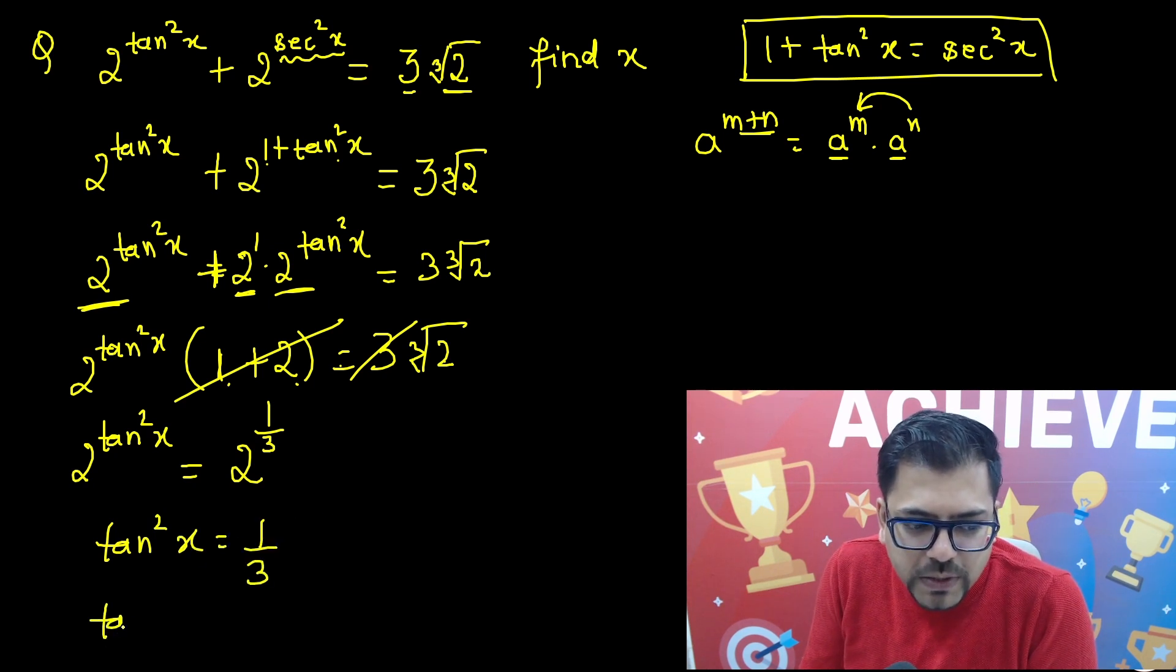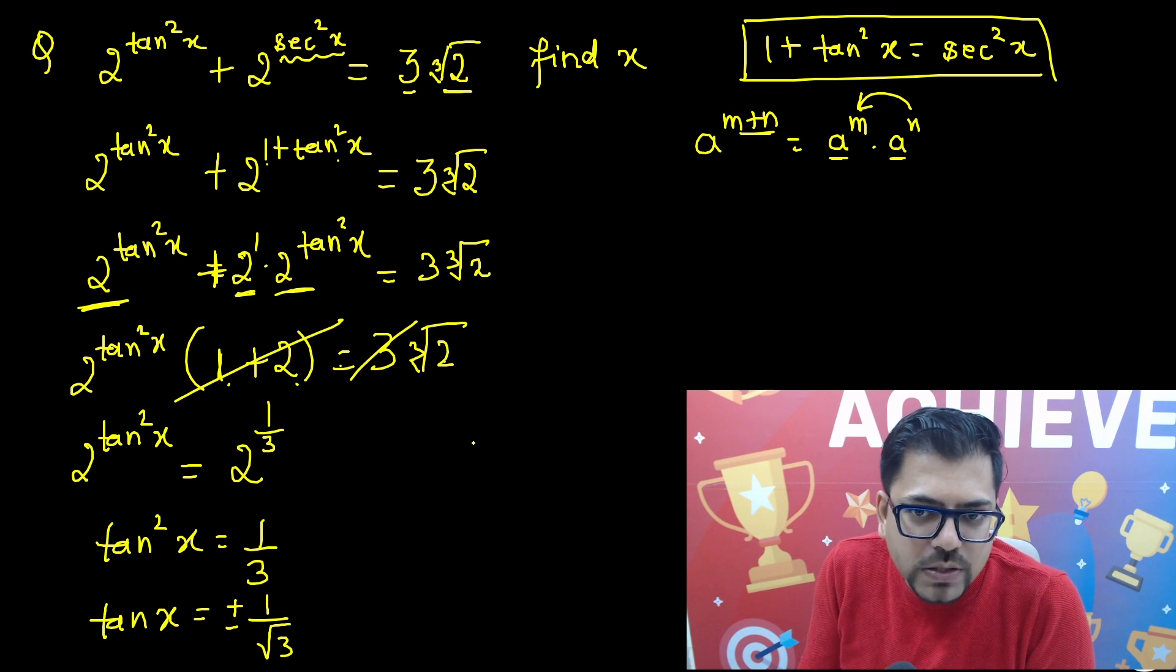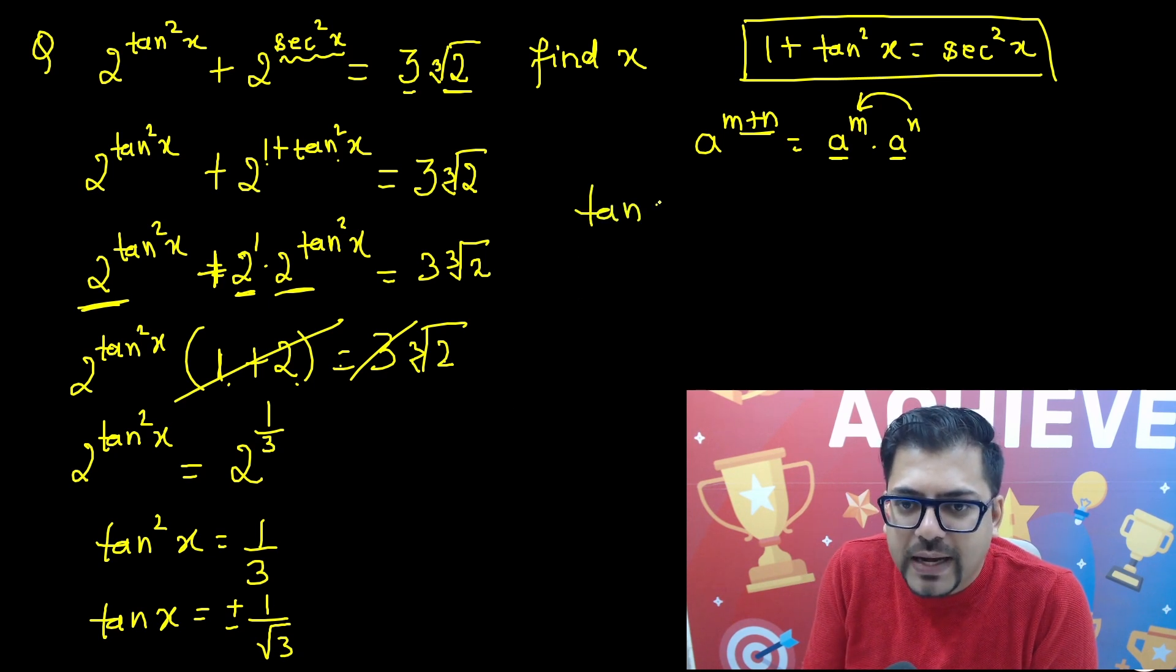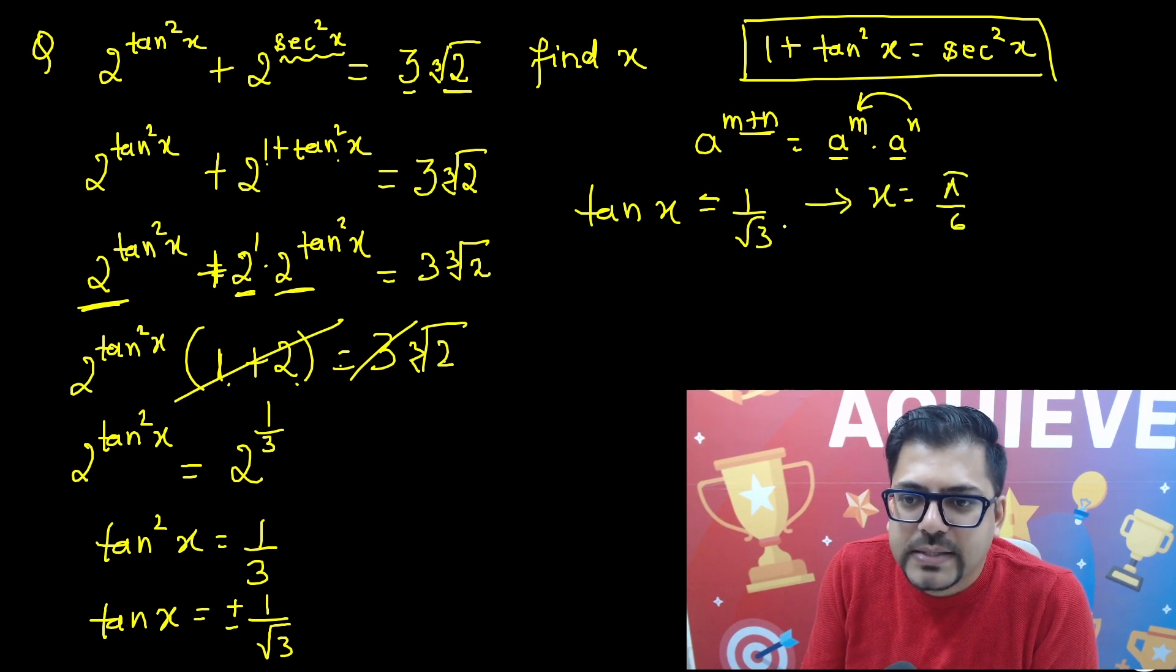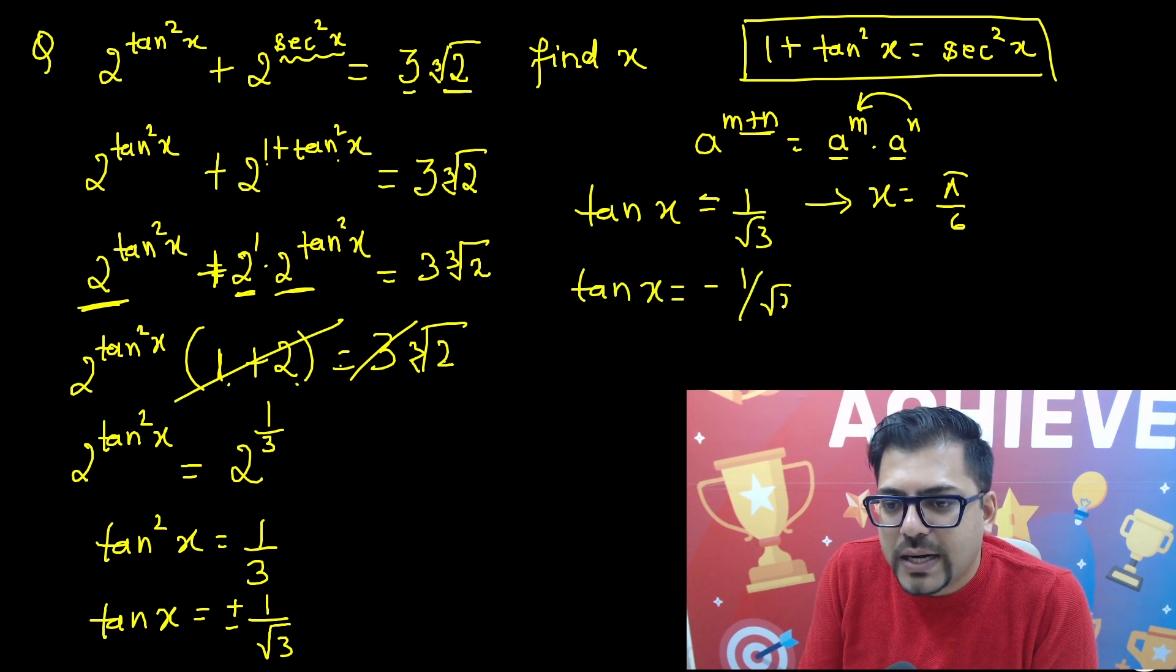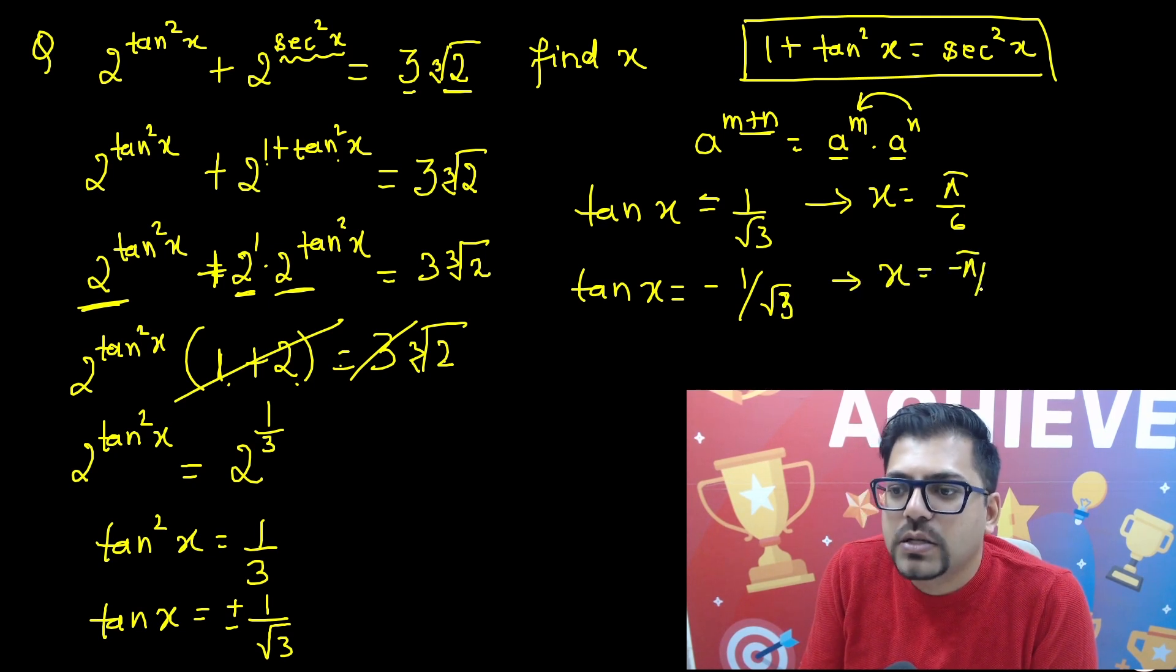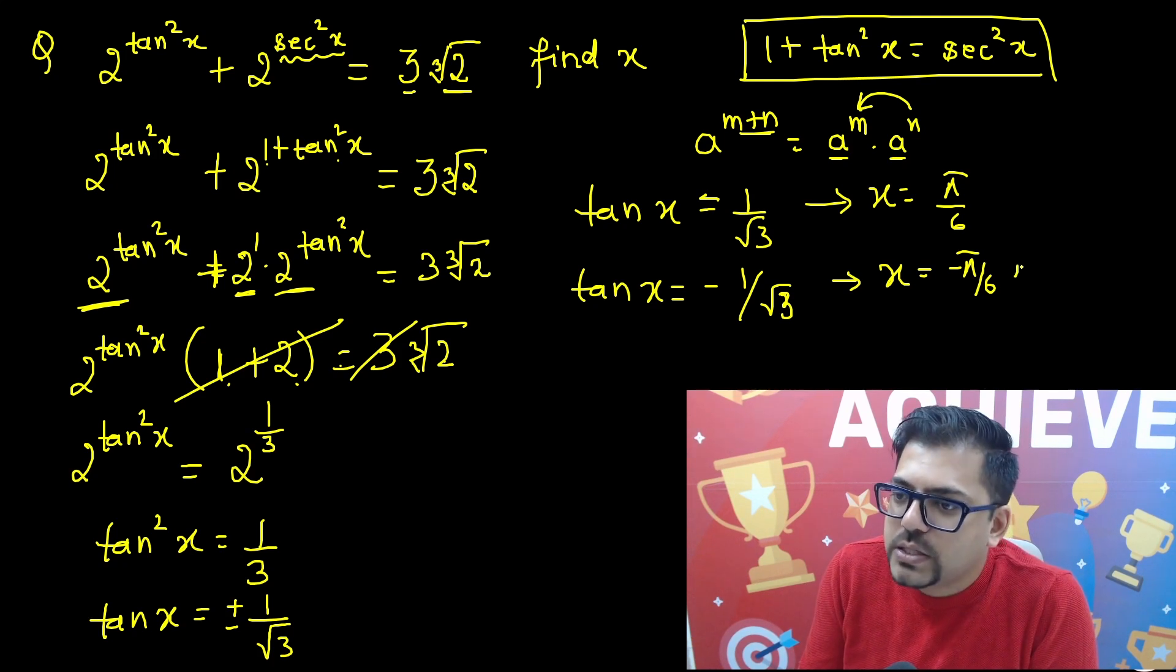And that tells me that, okay, this means tan x is going to be plus minus 1 upon root 3. Now plus 1 upon root 3. So if you have tan x equals to 1 upon root 3, very easily you can get the value that x is equals to 30 degree or you can say pi by 6. And if you have tan x is equals to minus 1 upon root 3, so that gives you the value of x being negative pi by 6. Or you can go to the second quadrant. So second quadrant it will be pi minus pi by 6. So pi minus pi by 6 is also an answer.